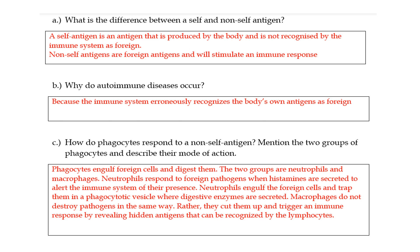I have a question here about how phagocytes respond to a non-self antigen, and I asked you to mention the two groups of phagocytes. Just remember from chapter four that phagocytes will engulf cells. There are two groups: the neutrophils and the macrophages. Neutrophils respond to foreign pathogens and are very short-lived. If you want more detail on this chapter, check out chapter 11 in the playlists on the channel.